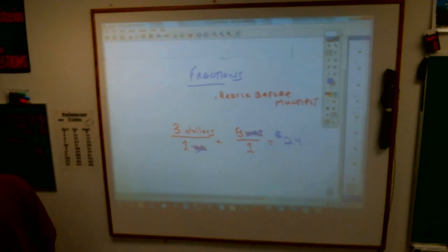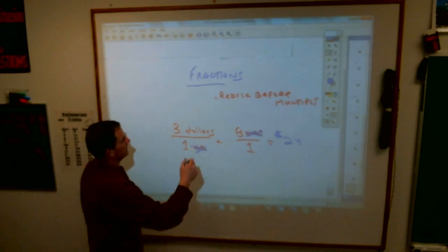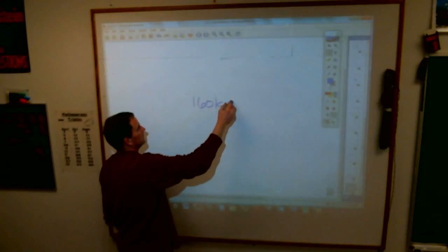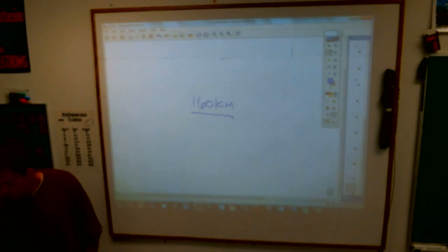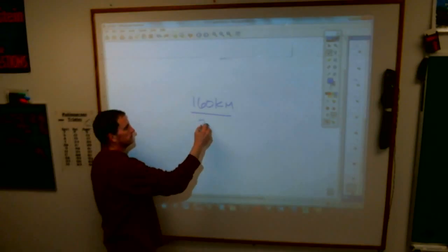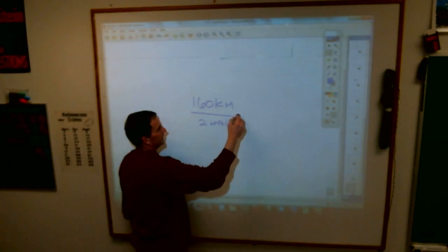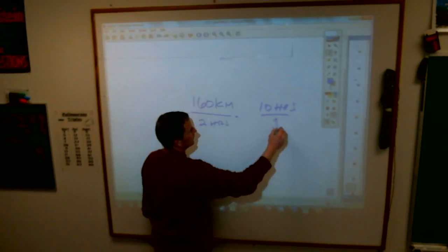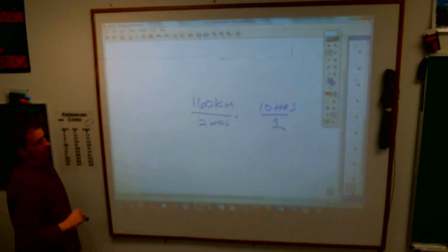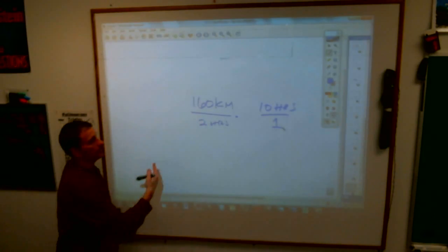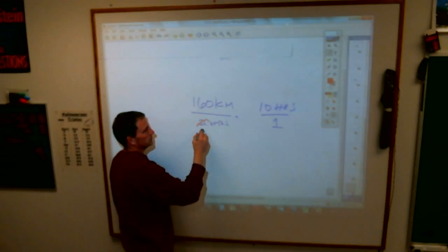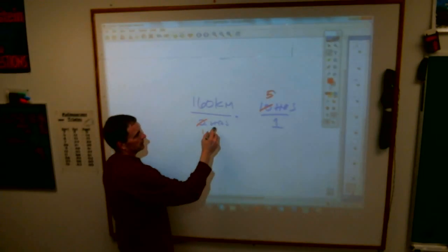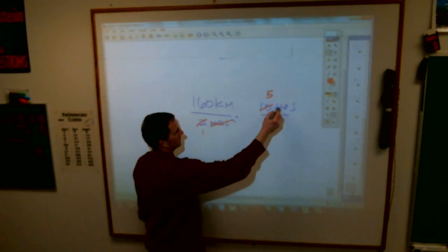Or another example might be 160 kilometers in two hours times 10 hours over one. You can cross-cancel both numbers here, because two goes into two ones and two goes into 10 five times. And you can also cross-cancel these two labels hours and hours.